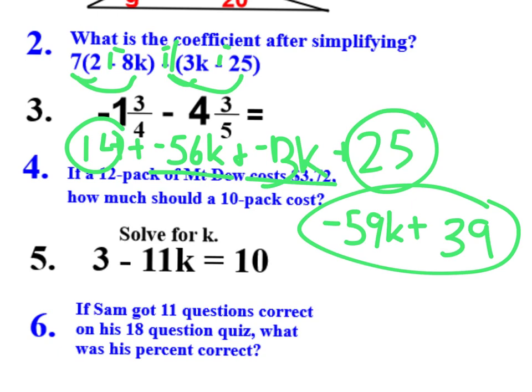We have a two-term algebraic expression. Can't do anything with it. We don't know what k is. We don't know what it's equal to. So we're done as far as that goes. We've simplified it, and now it asks for the coefficient. Remember, the coefficient is the number that is multiplied by a variable. So my coefficient here is negative 59. 39 would be the constant. Can't solve it, but negative 59 is the coefficient.